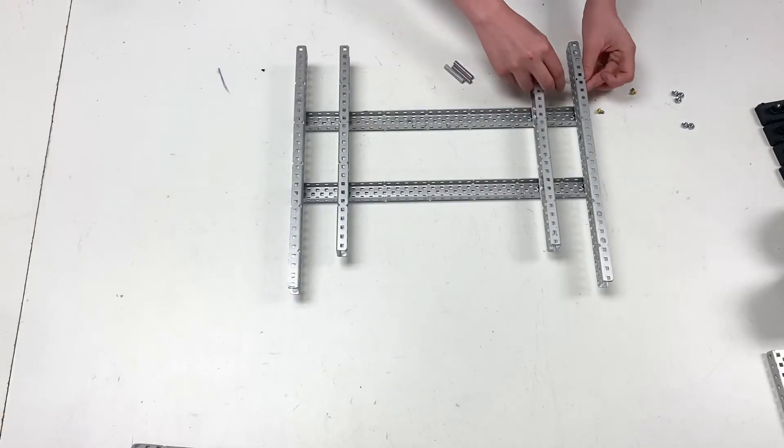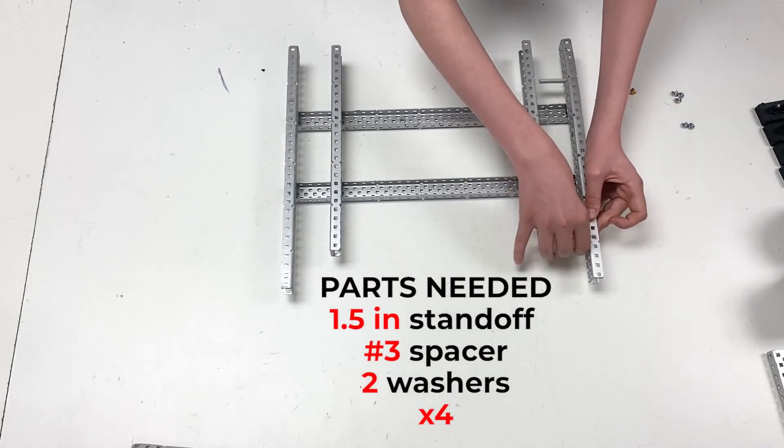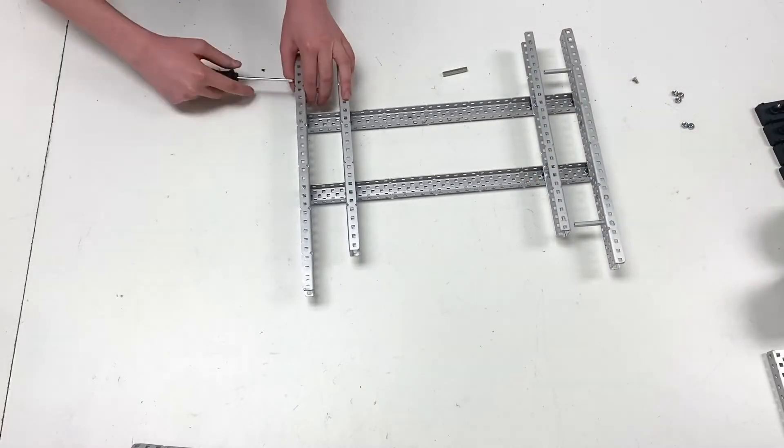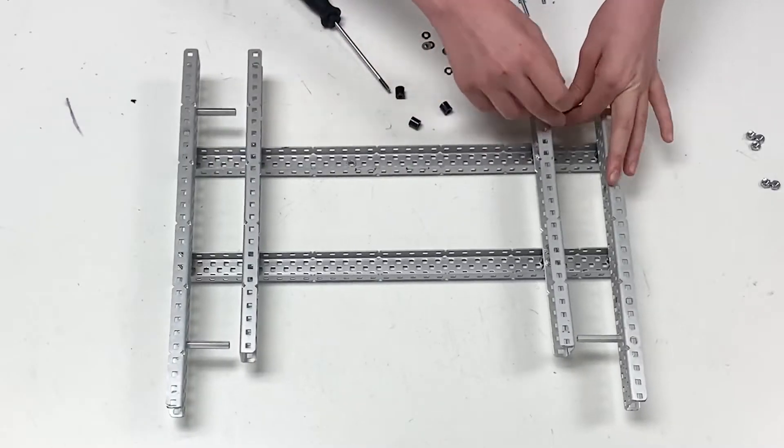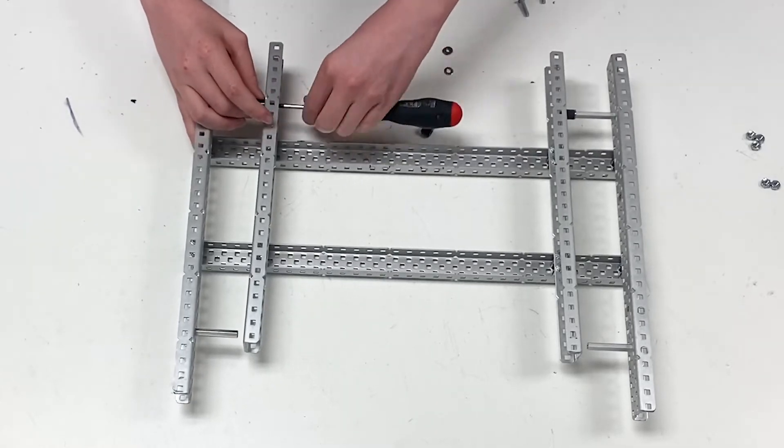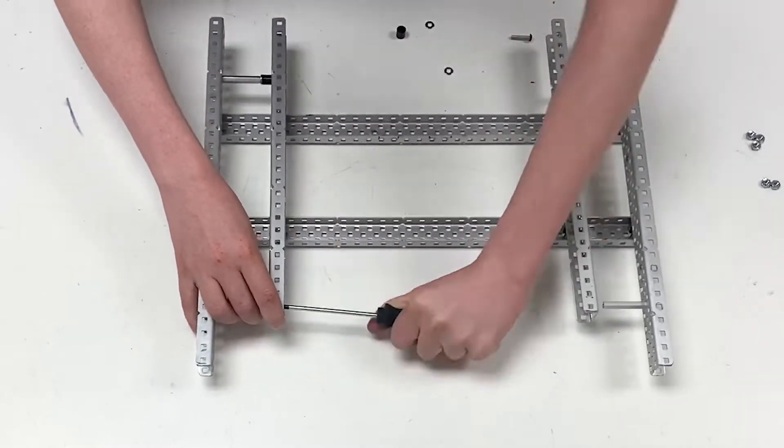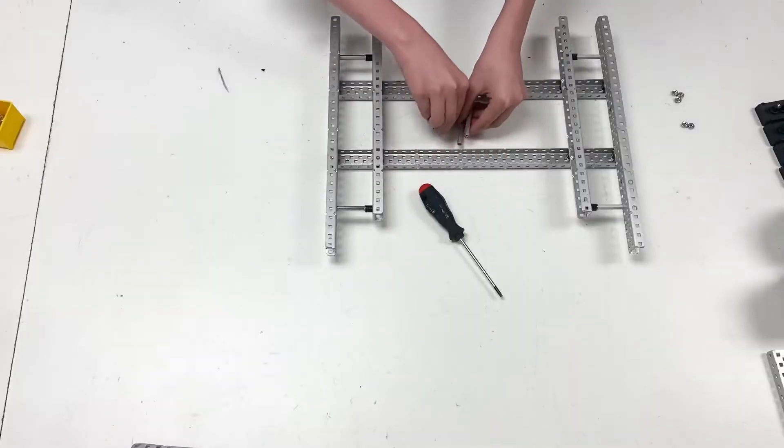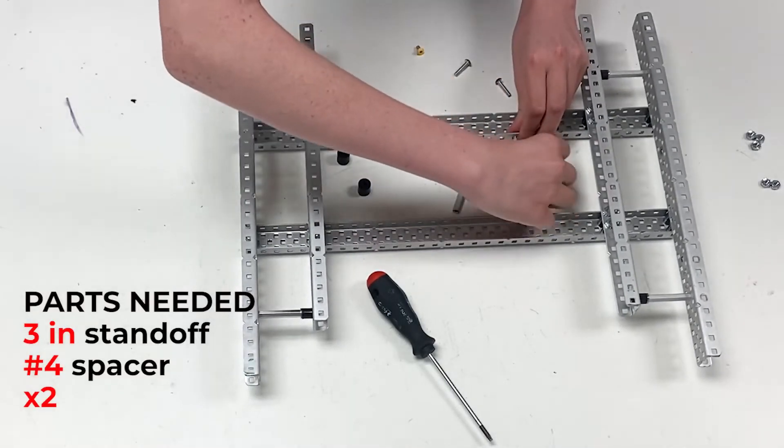All right, now to squaring the chassis. I'm going to have 1.5 inch standoffs and a three spacer with two washers to secure the two side channels that hold the wheels together. This is important because we don't want these moving when squaring the chassis. And this is a three inch standoff plus a four.